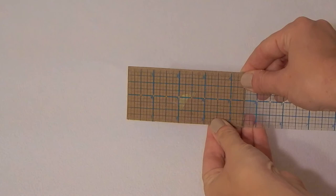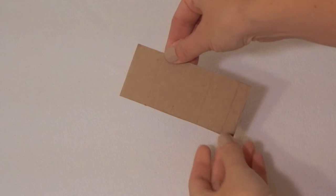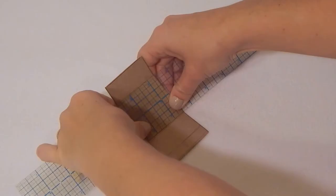To make the chimney, cut a rectangle from one of your boxes that is 4 1⁄2 inches by 2 inches, marking lines at 1 inch, 2 inches, 3 inches, and 4 inches. Bend on all lines.